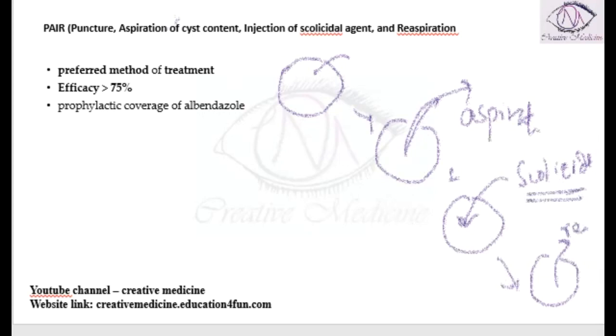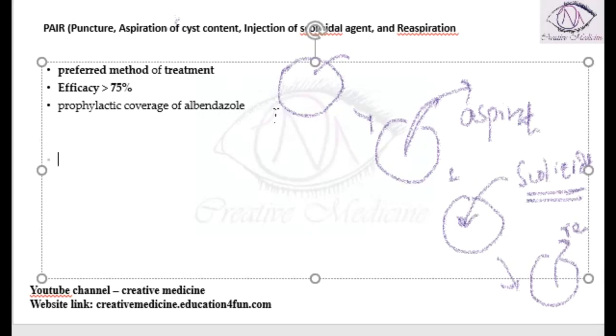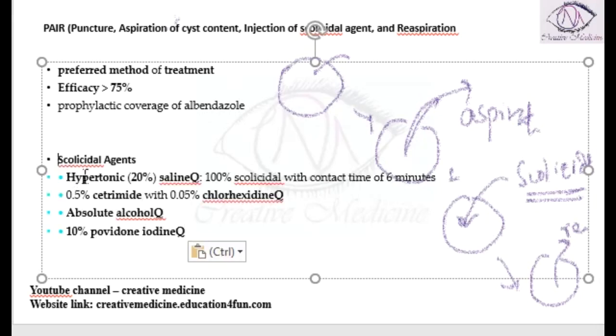In this you are using the scolicidal agents. You are injecting the scolicidal agents into the system. So what are the scolicidal agents used in PAIR technique? We have four different types of scolicidal agents which can be used.